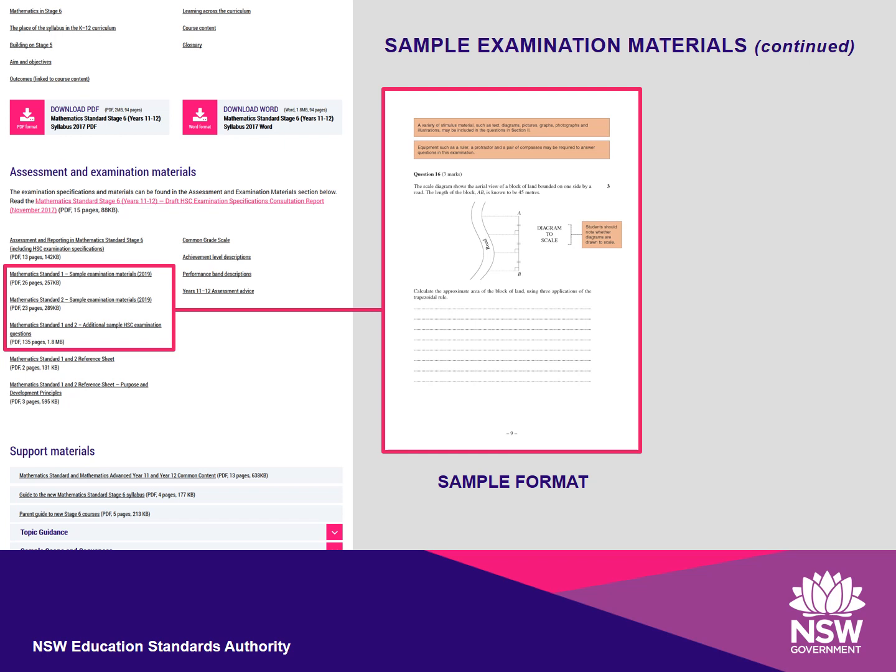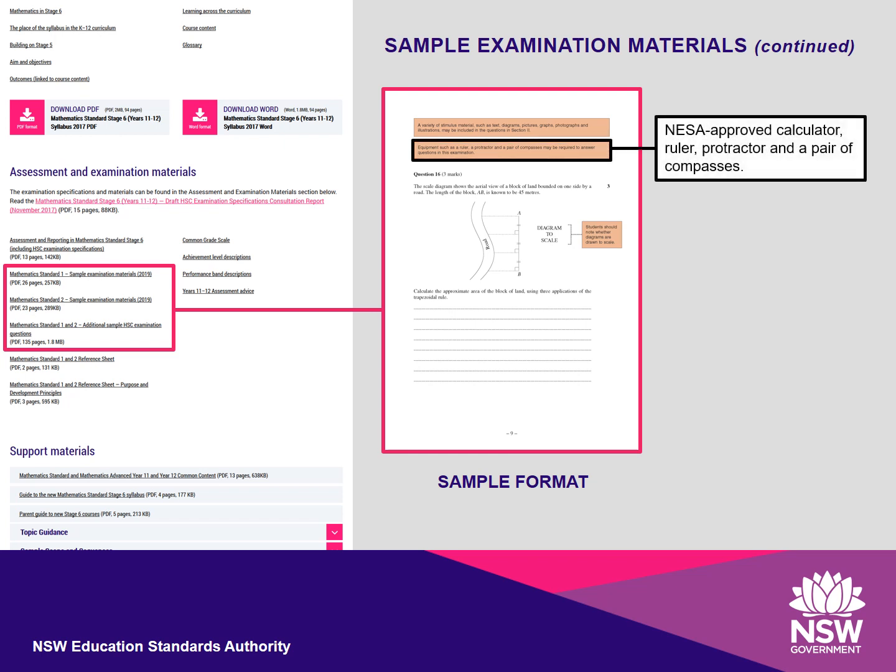Students are able to ask for more paper if they need it. The equipment list for the Mathematics Standard 1 and 2 exams includes a NESA-approved calculator, a ruler, a pair of compasses and a protractor. Note that mathematical curve drawing templates are not allowed in Mathematics Standard exams.